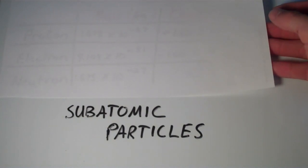Alright, so in this video I'm going to talk about subatomic particles. What are subatomic particles? Well, as the name simply implies, subatomic particles are particles that exist below the atomic level. So they're smaller than atoms, and they actually make up atoms.